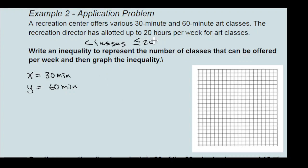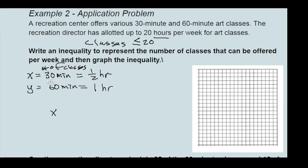Let's assign variables: let x equal the number of 30-minute classes and y equal the number of 60-minute classes. Since it says 'up to 20 hours,' that means less than or equal to 20. We have to be careful because time is given in minutes but the limit is in hours — 30 minutes is one-half hour, and 60 minutes is one hour.